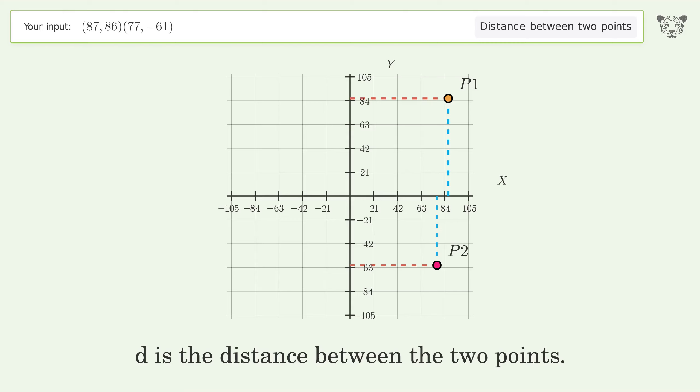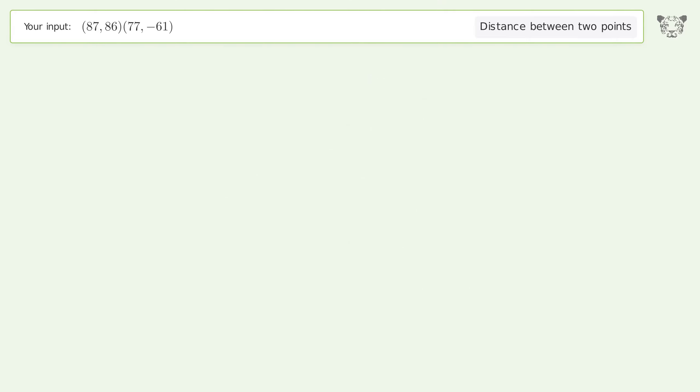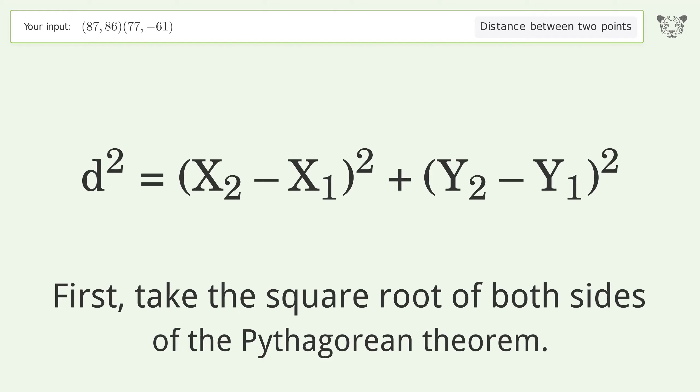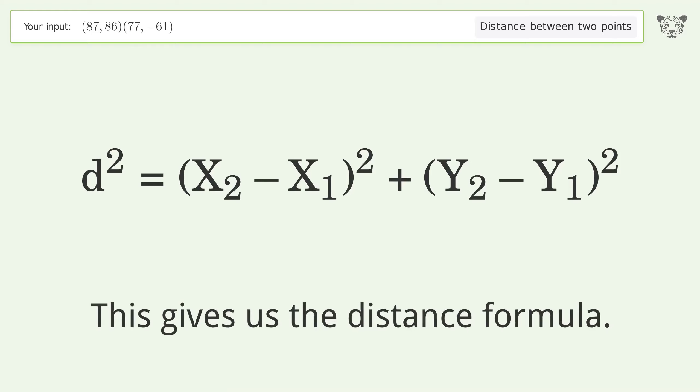d is the distance between the two points. First, take the square root of both sides of the Pythagorean theorem. This gives us the distance formula.